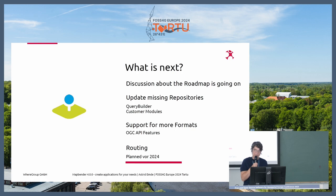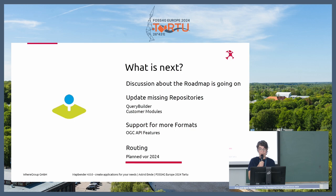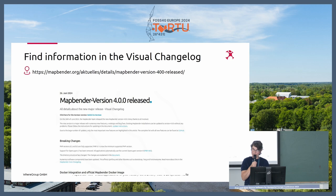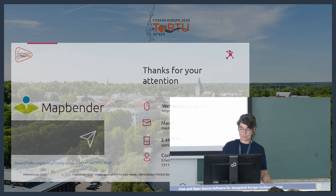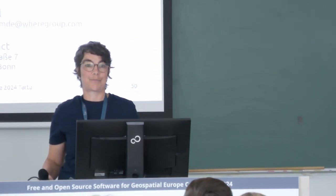We have some more goals for the future, still working on the roadmap. We need to update some repositories. In the next versions we want to work on new format support — we wanted to implement OGC API Features but it was not possible in version 4, so we have that for future releases, along with work on routing. Here's the link for the visual changelog. I hope you got an inspiration of what MapBender is and what you can do with it, and I'm happy to answer questions. Thank you very much.